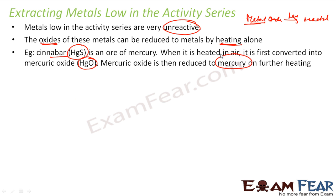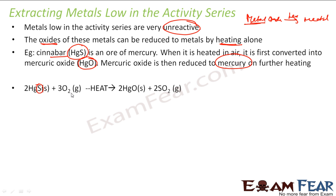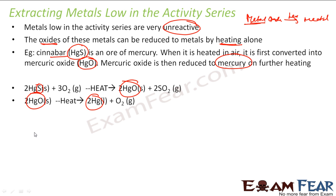The reaction is like this: you have HgS, the cinnabar, heat it in the presence of oxygen, it becomes HgO — mercury oxide — and then you again heat it, and you get oxygen and SO₂. So you just heat it and you get the metal. These are the low reactive metals.